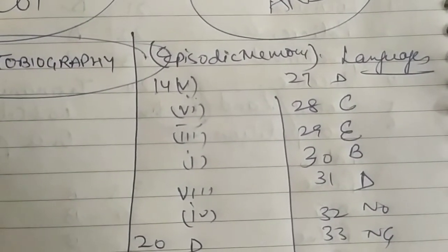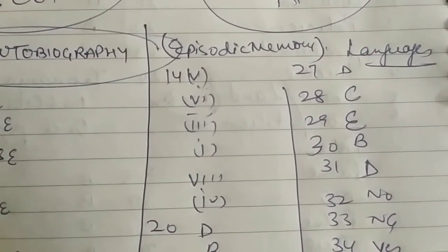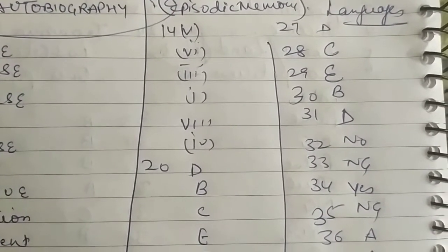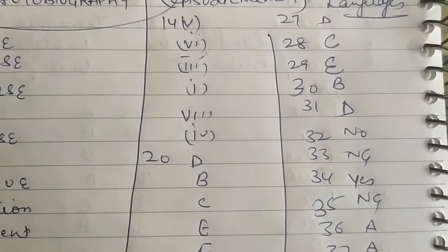The third passage was based on languages. Thirtieth is B, thirty-first is D, thirty-second is no, thirty-third is not given, thirty-fourth is yes, thirty-fifth is not given.